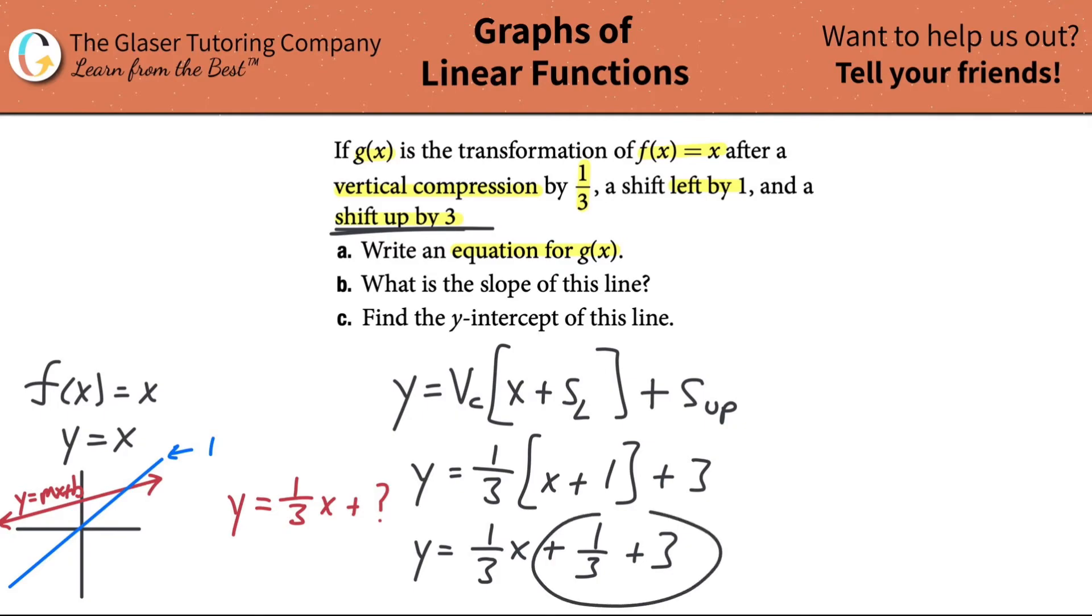And now what do we have? Now we can combine our like terms. And now look at the form here. Look at how beautiful this is. One-third x plus one-third plus three is basically three and a third, right? You can leave it as three and a third. You can convert this into an improper fraction, which would be 10 over 3. Or you can write this as a decimal, 3.3 repeating. It doesn't matter to me what you do. I'm going to use the decimal. People like decimals more than fractions.